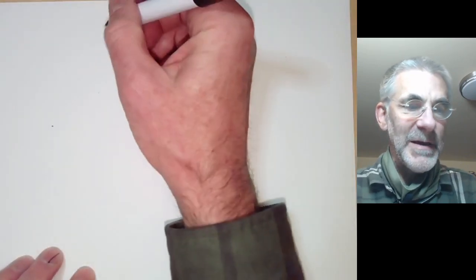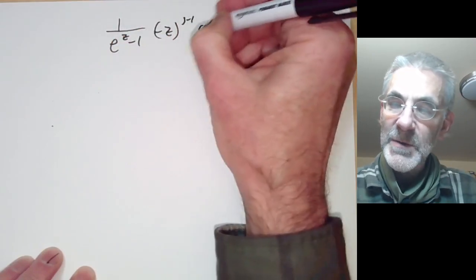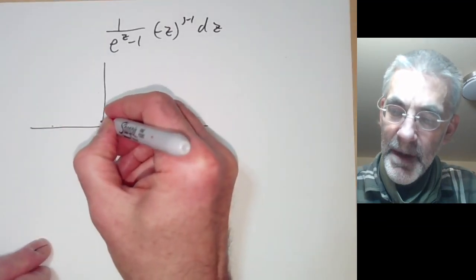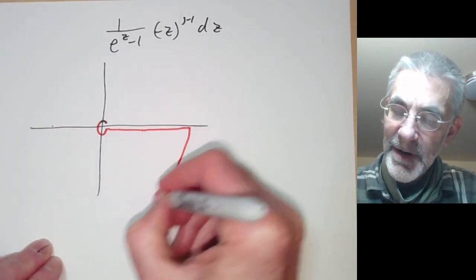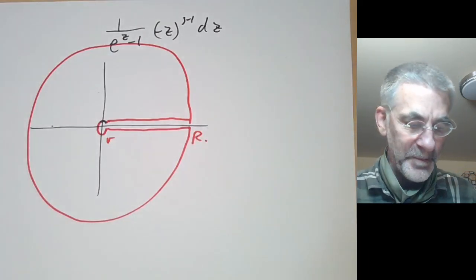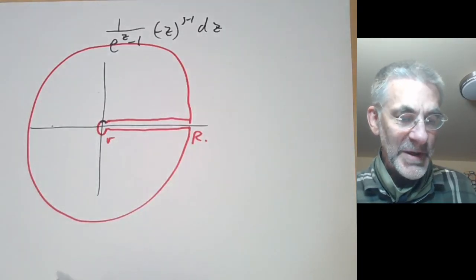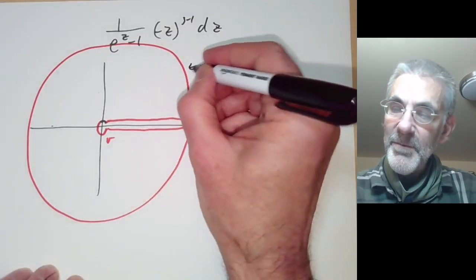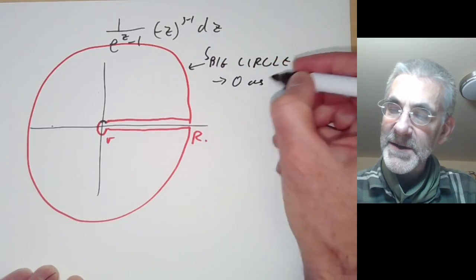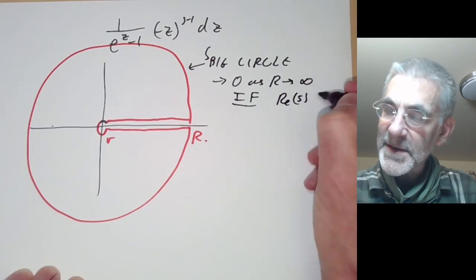We look at the function 1/(e^z − 1) times (minus z) to the s minus 1 dz and integrate around a Bromwich-style contour drawn in red: a little circle of radius r, then around a big circle of radius R, and back again. The integral around the big circle tends to zero as R tends to infinity if the real part of s is less than zero.